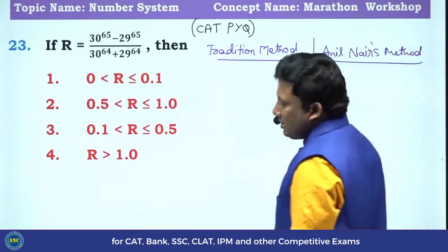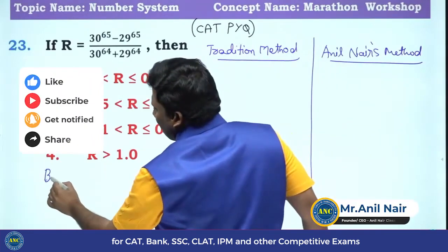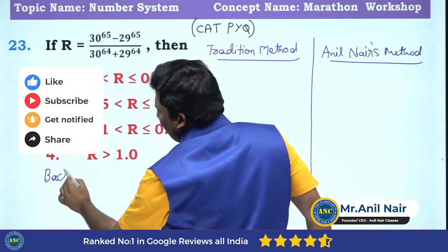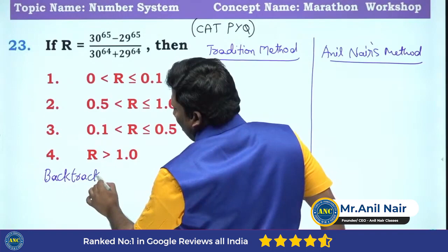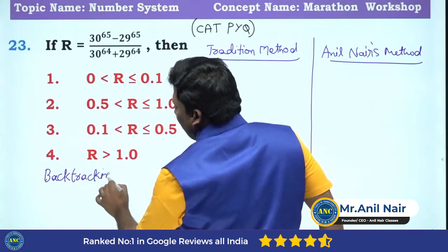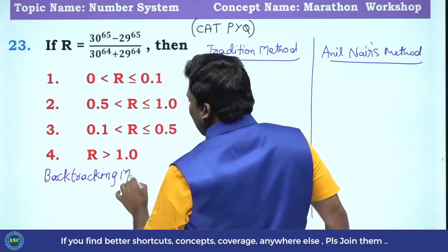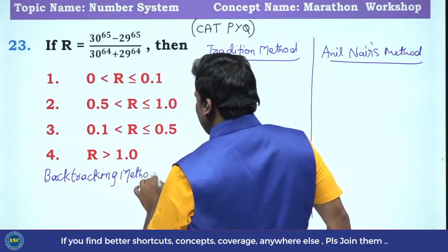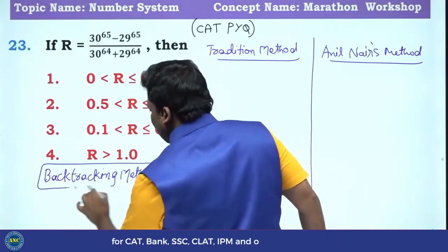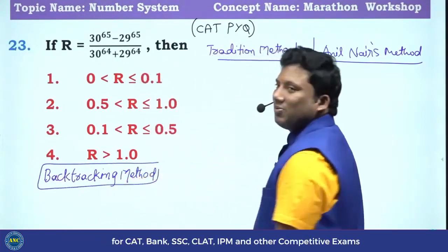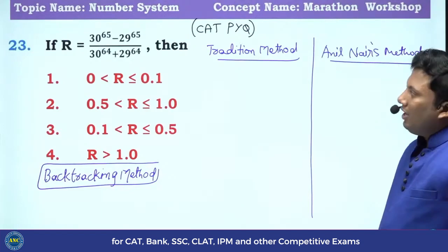We will also discuss the backtracking method. This is another very interesting logic to check whether the answer is right or wrong by using the answer options. So three methods we will use to solve this particular problem.